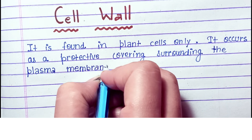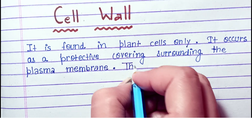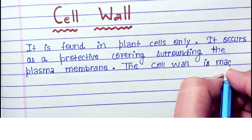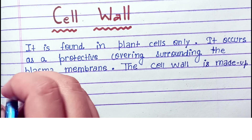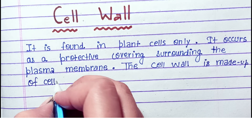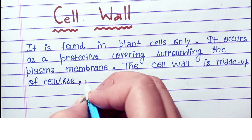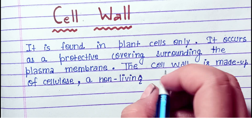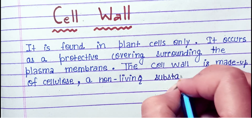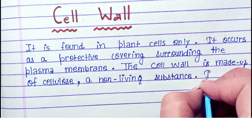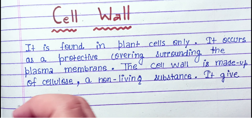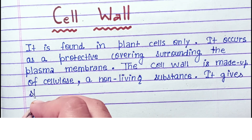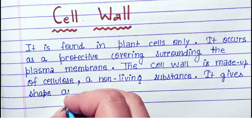The cell wall is found in plant cells only. It occurs as a protective covering surrounding the plasma membrane. The cell wall is made up of cellulose, a non-living substance.